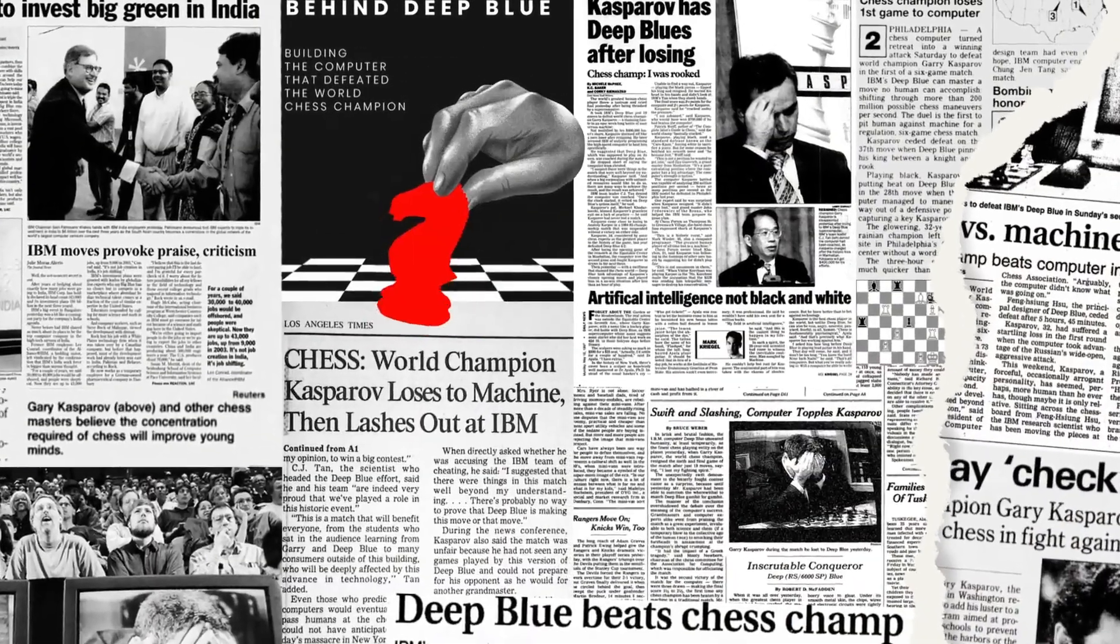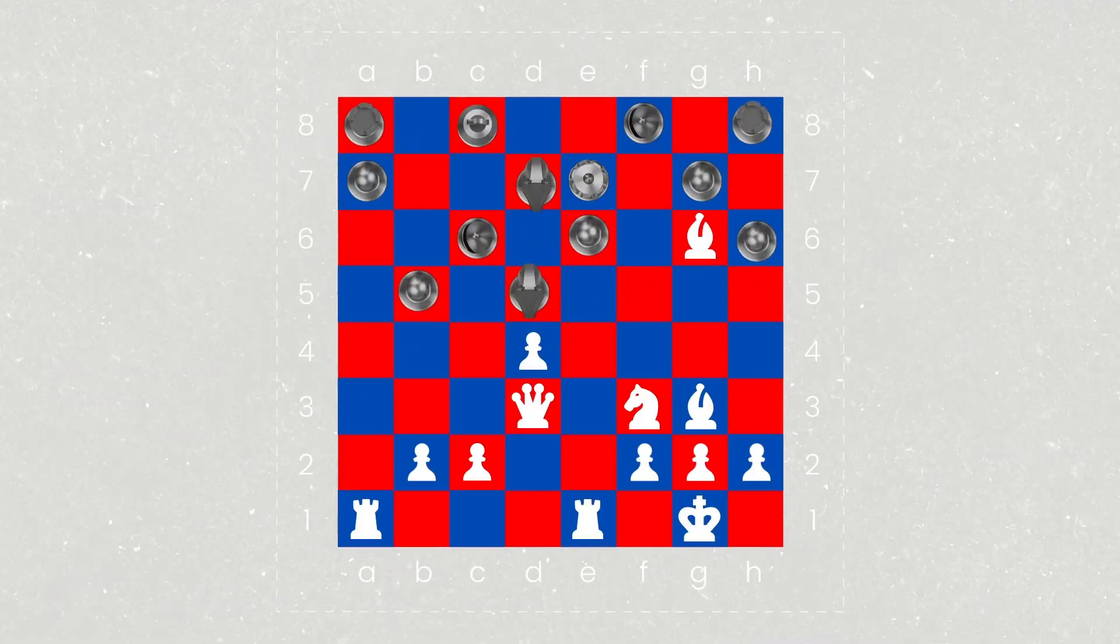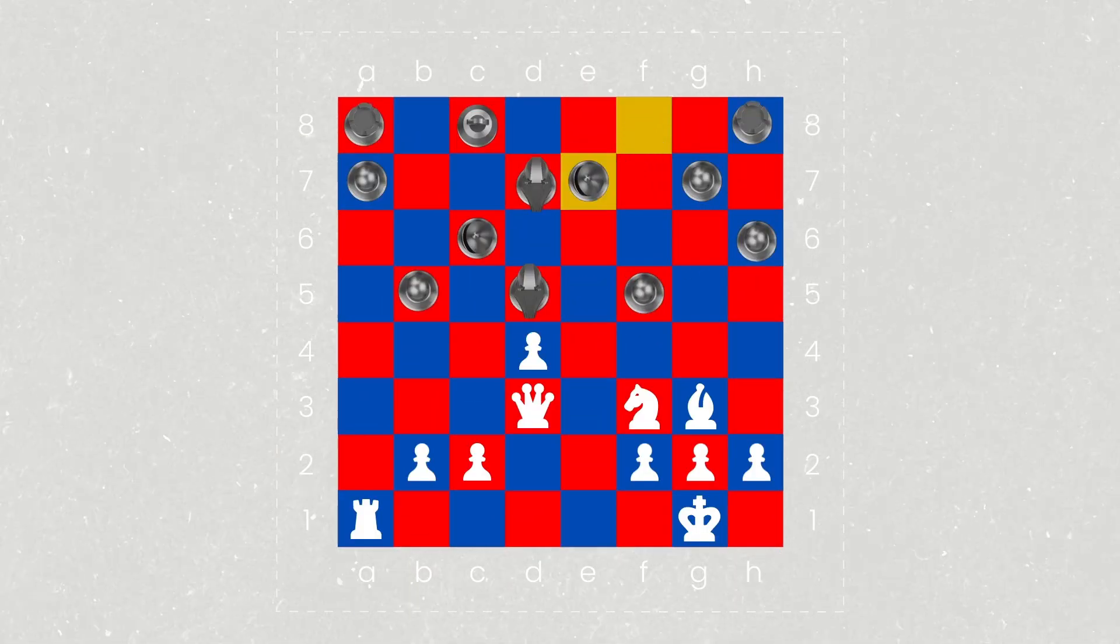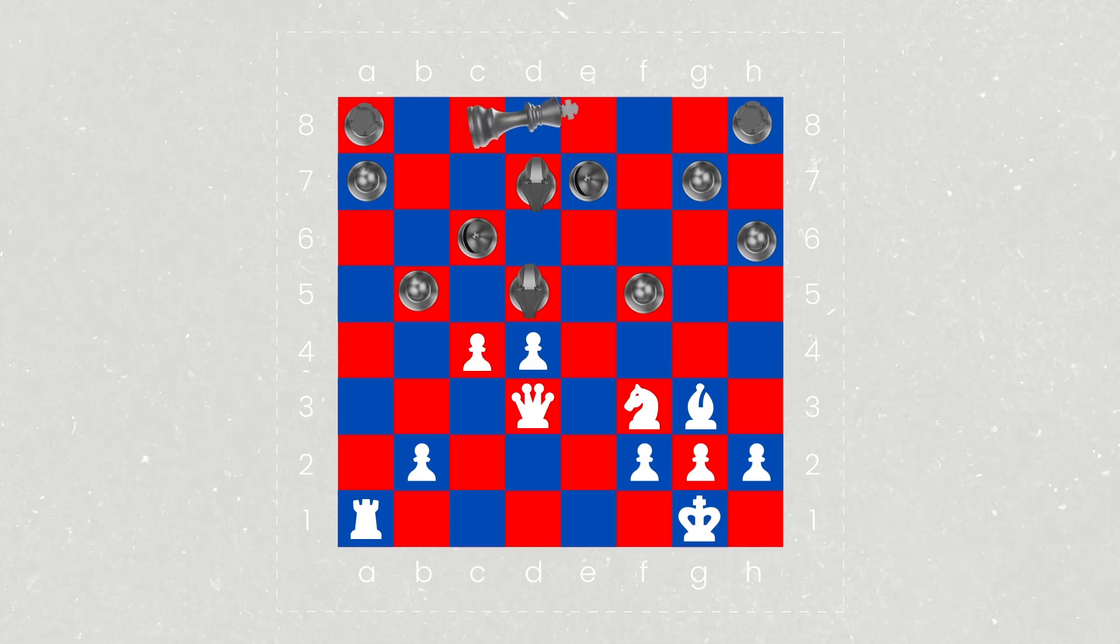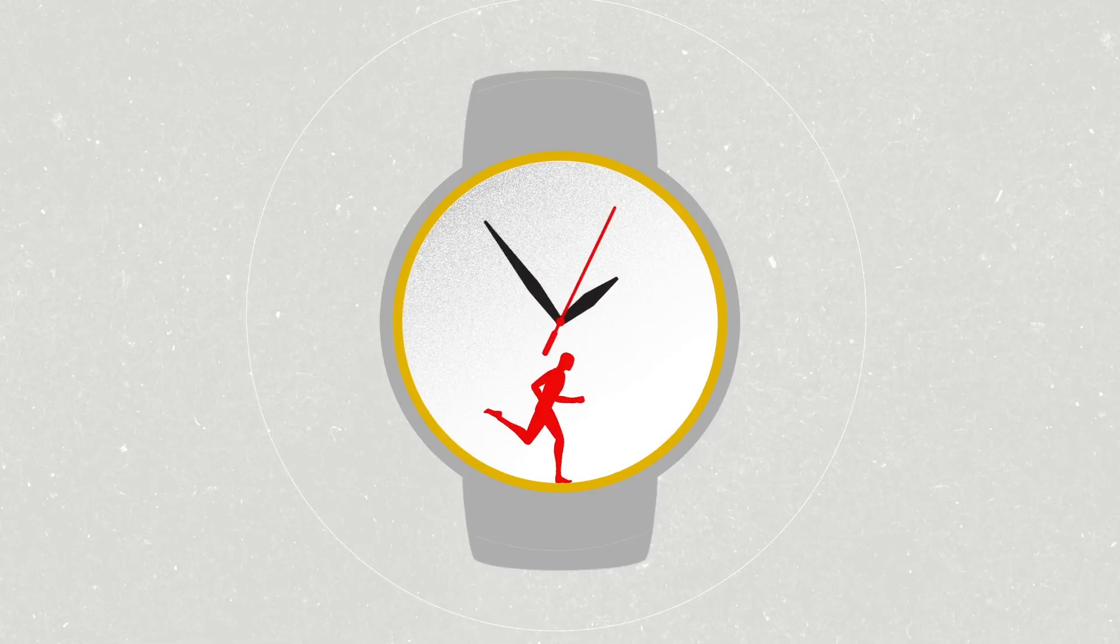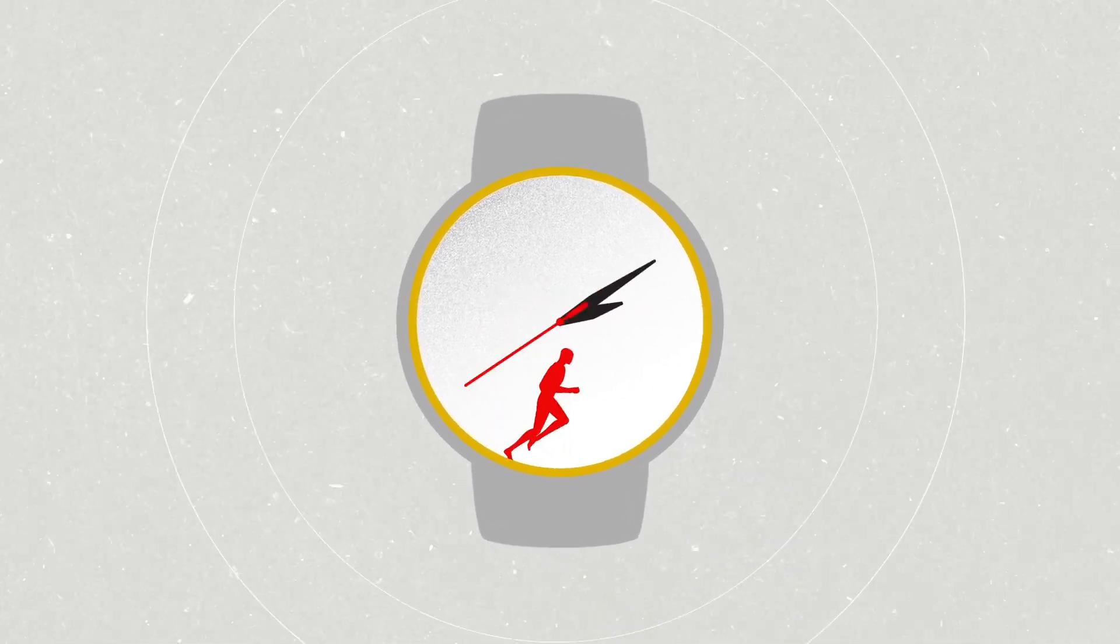In 1997, world chess champion Gary Kasparov lost a historic match to IBM's Deep Blue. For the first time, artificial intelligence had outmaneuvered an expert. But with symbolic AI, it took an enormous amount of programming time and computing power to master a single human activity.